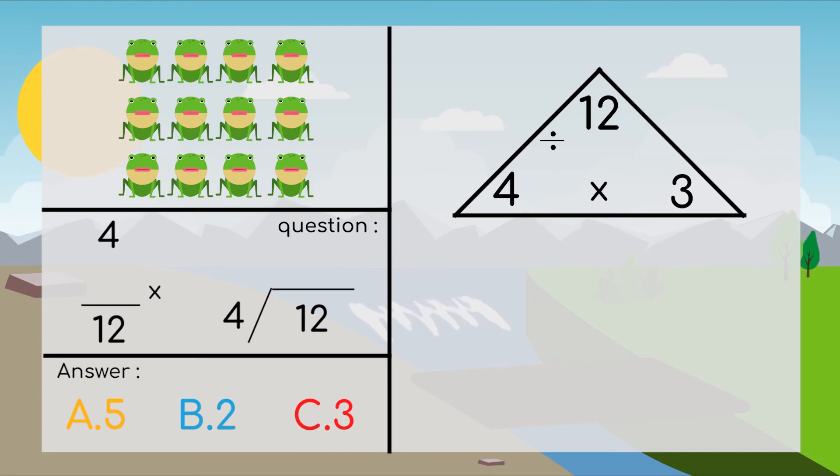We use skip count 4 and do it until we got our total number. So it's 4, 8, 12. How many times do we skip count? 3.